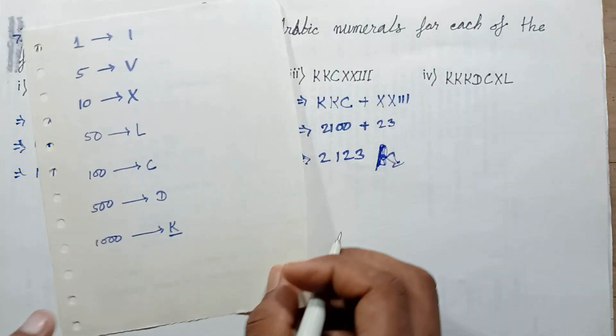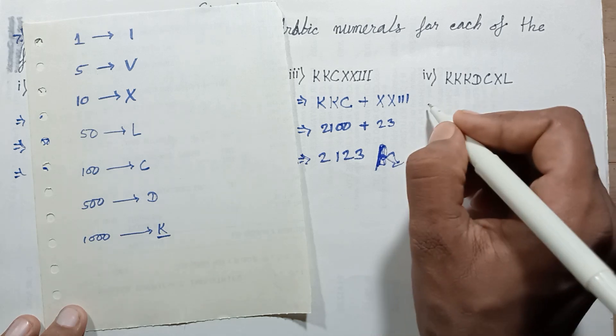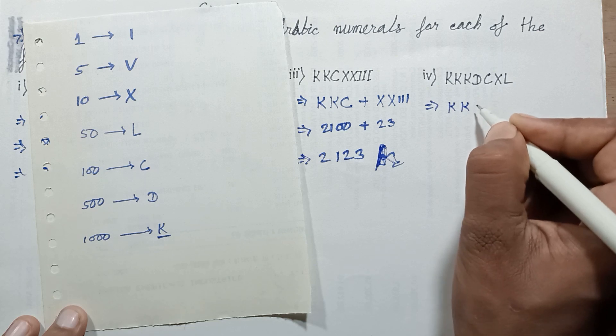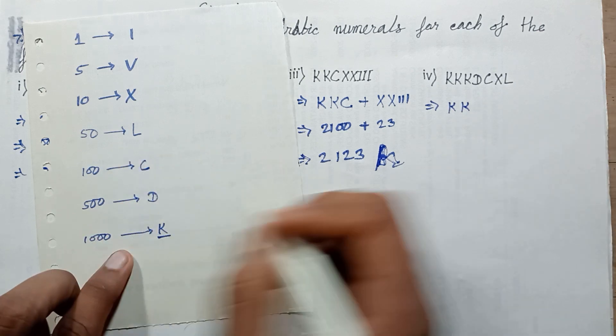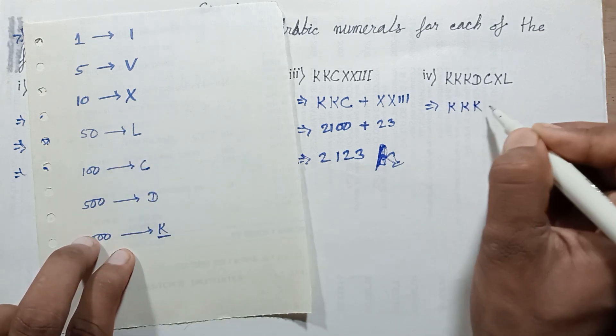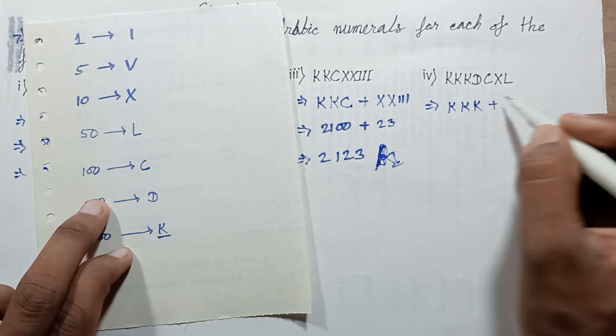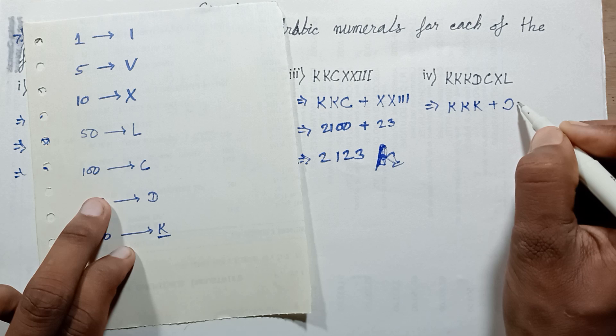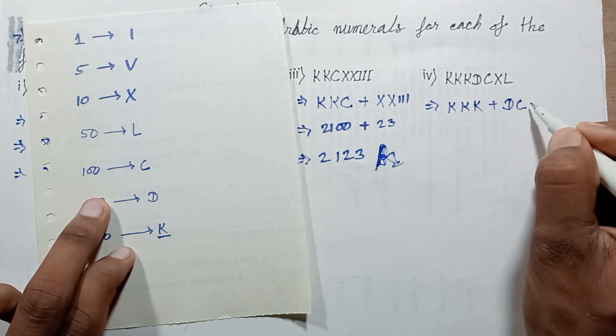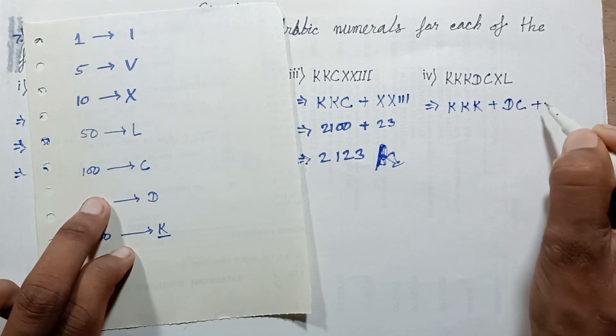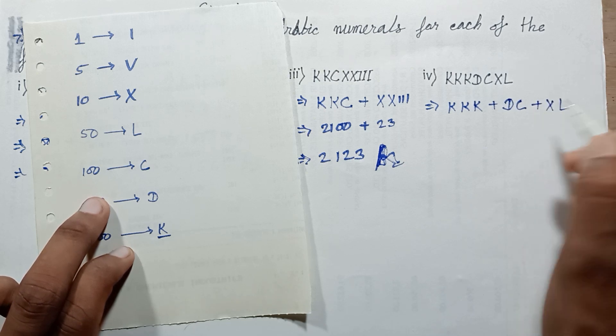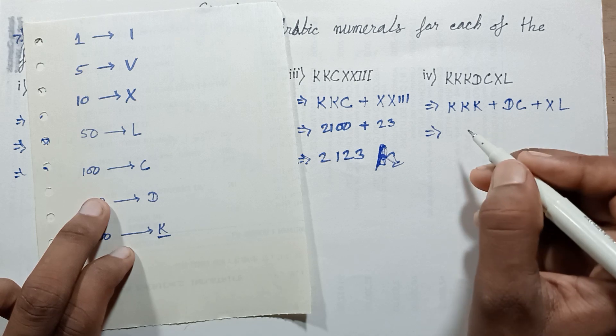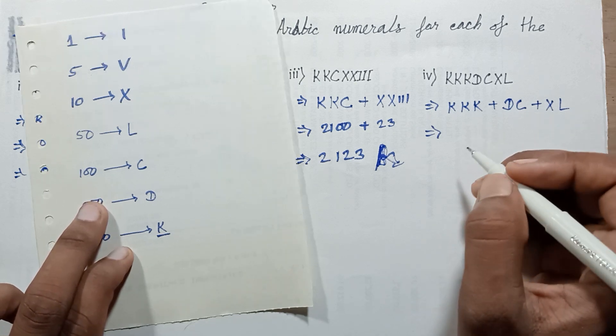Question number fourth is three times K, plus one time D, plus one time C, plus XL. This Roman numeral, write in Hindu-Arabic numerals form.